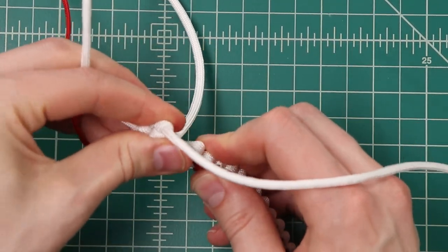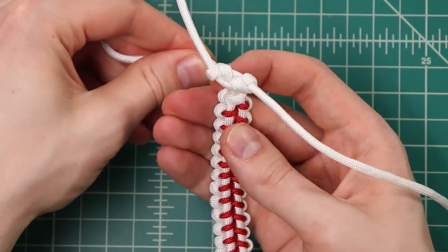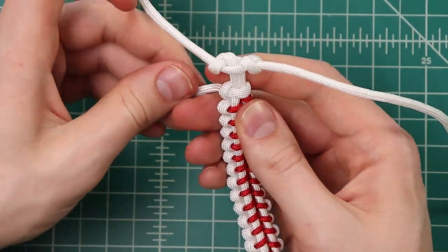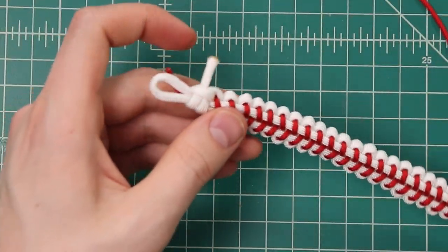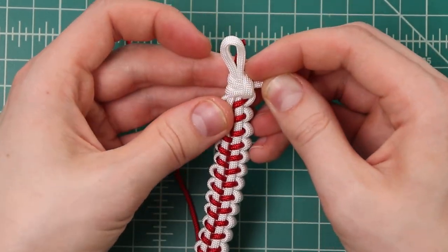So now once those are all pulled tight we can go ahead and clip our ends. We just want to make sure that those knots at the end of our weave are good and tight before we clip them. So that includes at the starting end too. Just tighten up that cow hitch before we cut any of our cords.